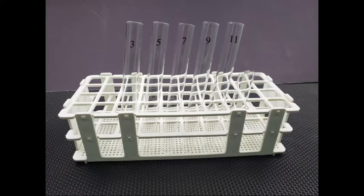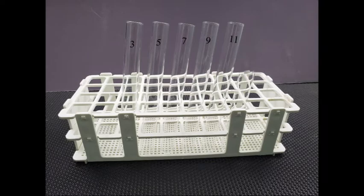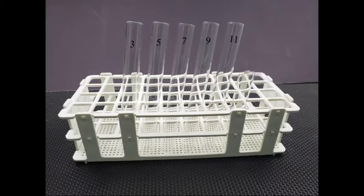Use a clean graduate cylinder to measure separate 40 drops or 2 milliliter portions of pH 3, pH 5, pH 7, pH 9, and pH 11 buffer solutions and pour the portions respectively into test tubes 3, 5, 7, 9, and 11. Remember to wash and drain the graduate cylinder after measuring each buffer.